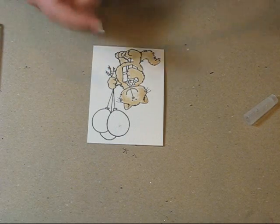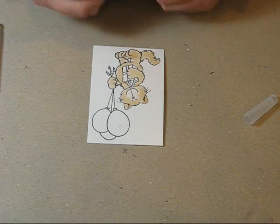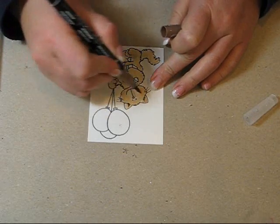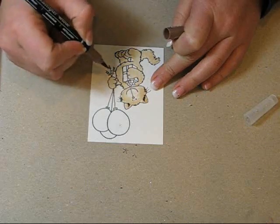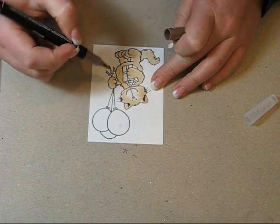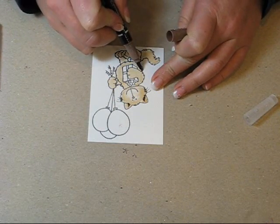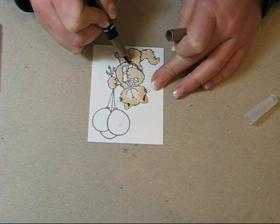So now I want to shade him, and I'm using Close to Coco. And I'm putting the colors in where you can see natural shadow lines, or where there would be shadows, like under his arm there would be a shadow. And same with under the present.